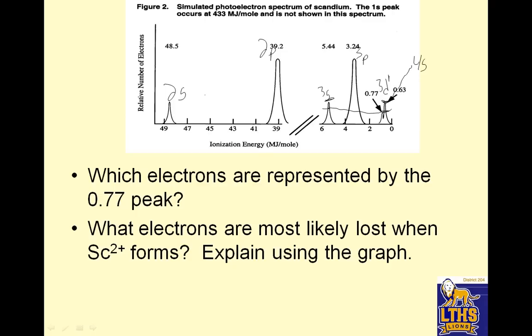Which electron is represented by the 0.77? I'm going to call it the last electron, which is the one in the 3d. What electrons are most likely lost when scandium plus 2 forms? The ones most likely lost are the 4s because they are the lowest energy. Remember, you always pick the lowest energy electrons to remove first. The higher ones are bonded more stronger.